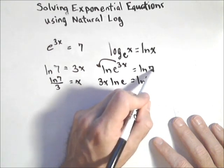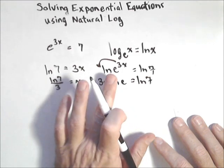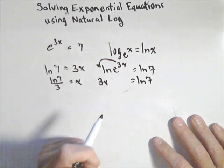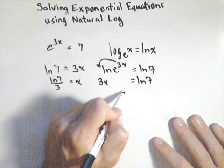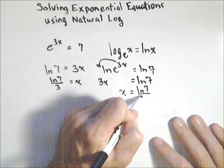Now one of the main reasons we want to use natural log when we have e, well natural log of e is just equal to 1. So divide both sides by 3 and once again we get x equals ln of 7 over 3.